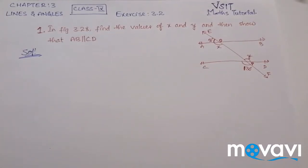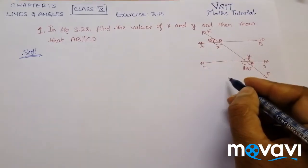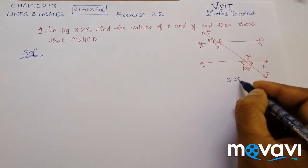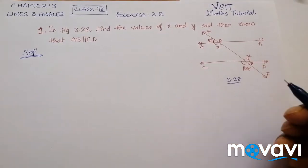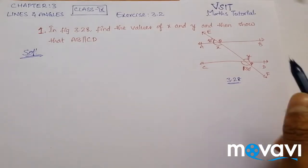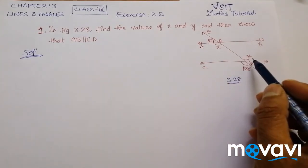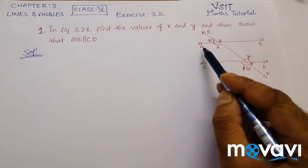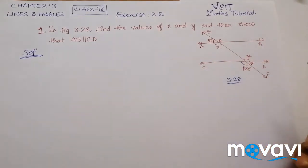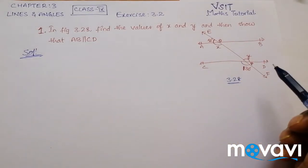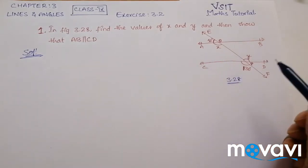This is the first question of exercise 3.2 of chapter Lines and Angles of class 9. The question given here is in figure 3.28. Find the values of X and Y and then show that AB is parallel to CD. Now let us try to find the values of X and Y.